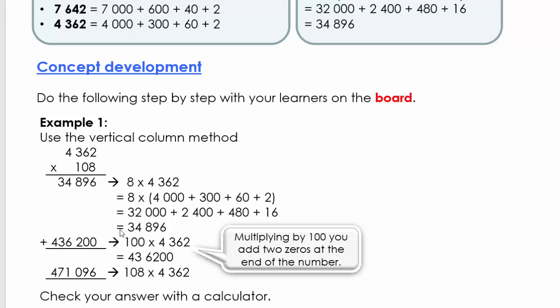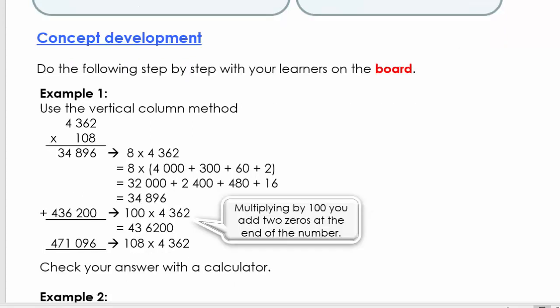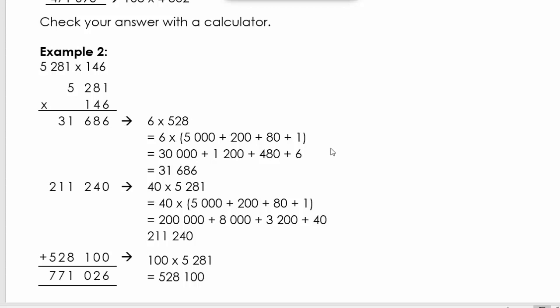Welcome back. We're going to look at example number two. In example number two we've got 5,281 times 146. We're going to write it underneath each other: 5,281 times 146. We're going to use the same method again. Like I said, it's the techniques that count, and what we're going to do is later in the year we will learn how to multiply it by only using this left hand side.